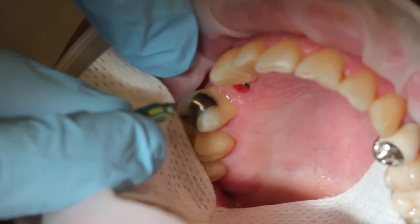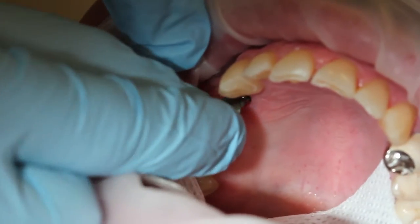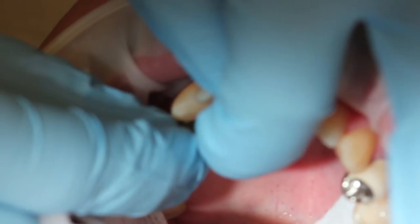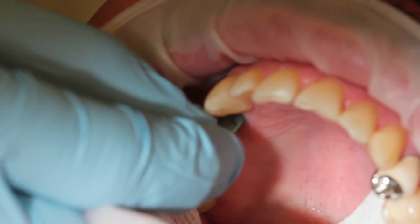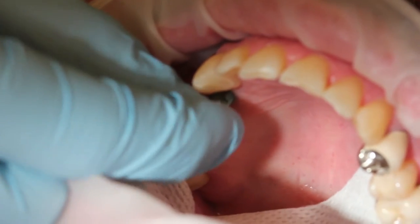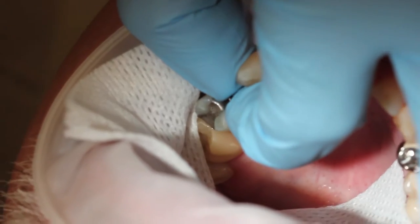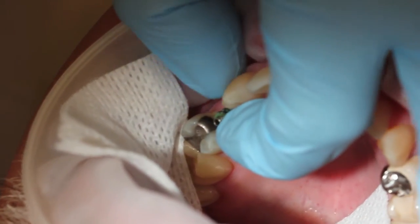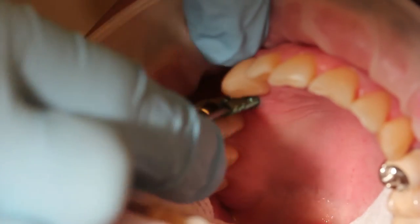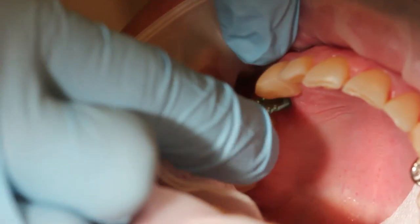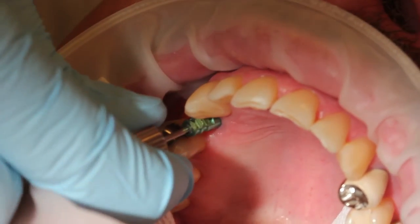The next step is to seat the impression coping. The impression coping has a hex at the bottom which will engage with the internal part of the implant. Once you think you have it seated fully, gently rotate the impression coping to make sure that the hexes are engaged. The anti-rotation component will tell you if it's seated all the way. Now tighten the implant with the driver and give it a good tighten to make sure that it's seated.